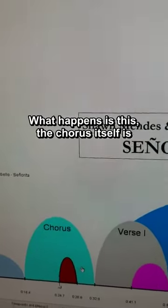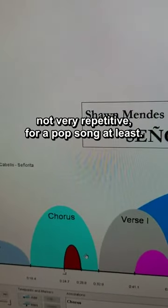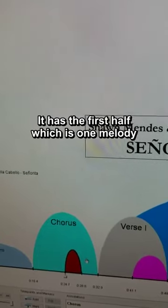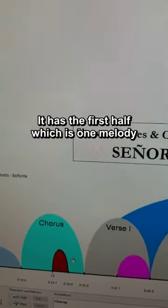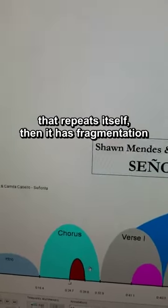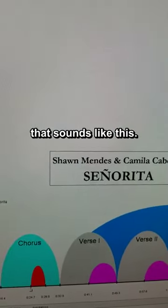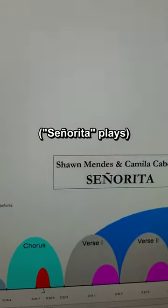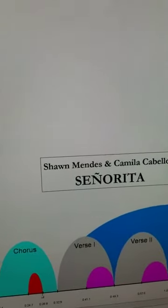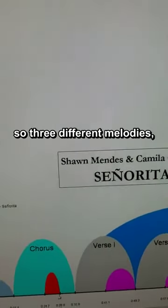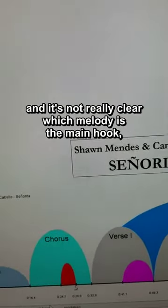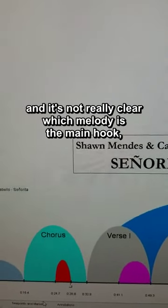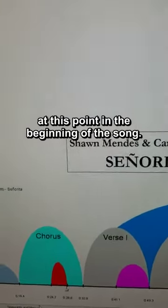The chorus itself is not very repetitive, for a pop song at least. It has three different melodies in it — the first half, which is one melody that repeats itself, then it has fragmentation that sounds like this, and then there's a cadential melody. So three different melodies, and it's not really clear which melody is the main hook at this point in the beginning of the song.